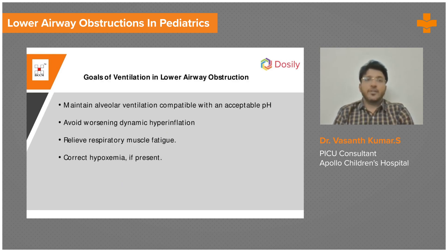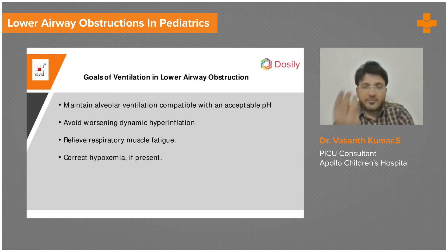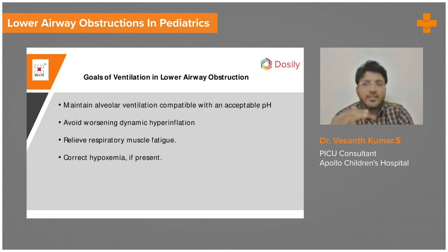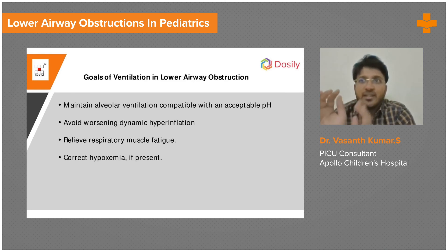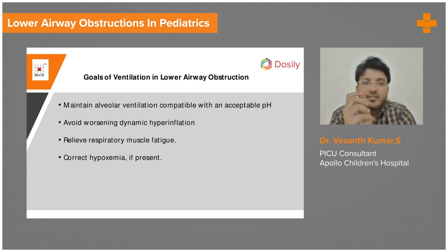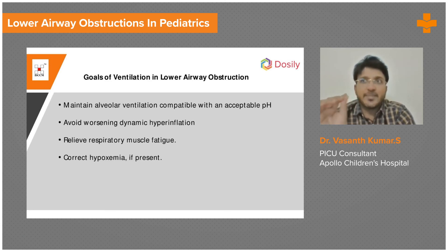The main aim of ventilation in lower airway obstruction is to prevent hyperinflation. All air given goes to normal alveoli, causing over-inflation, while already hyperinflated alveoli get even more hyperinflated. So low tidal volume strategy is used. Lung-protective ventilation holds good even for asthma — low tidal volume and accepting permissive hypercapnia. If pH is above 7.2, you are happy, and you try to avoid dynamic hyperinflation.